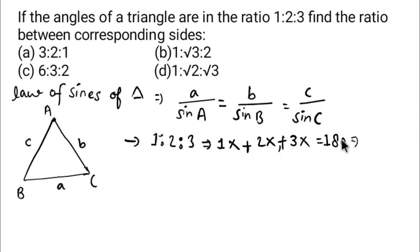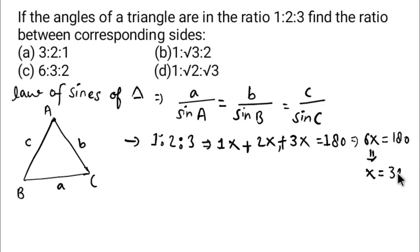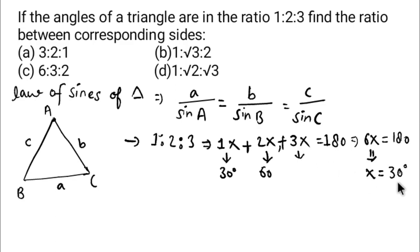So 1x + 2x + 3x = 180 degrees, which gives 6x = 180, so x = 30. The first angle is 30 degrees, the second angle is 2×30 = 60 degrees, and the third angle is 3×30 = 90 degrees. This is a right-angle triangle with angles 30°, 60°, and 90°.